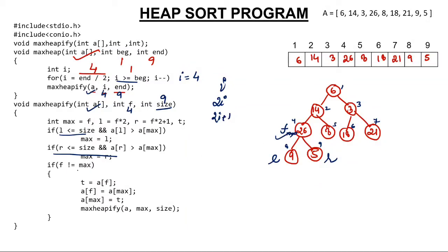Is F not equal to maximum? F and maximum both are equal because F is at index 4, max is at index 4. Since both are equal, I will not move inside. So I will again go back and make i value to 3, because I have to start from 4 to 3.